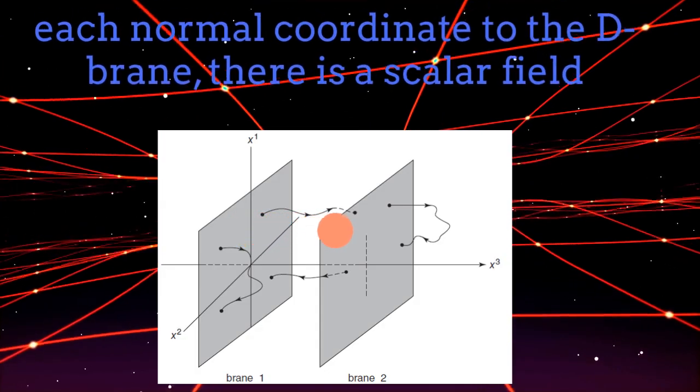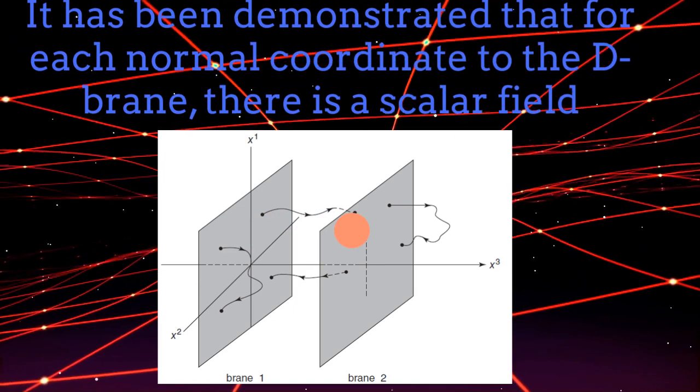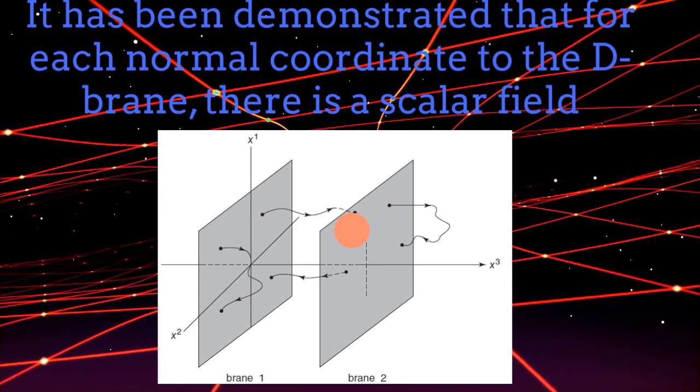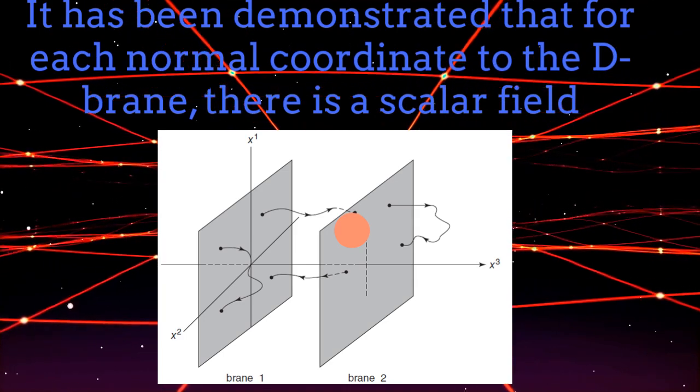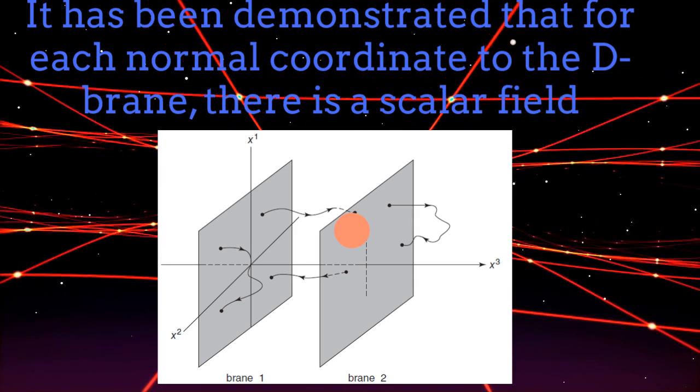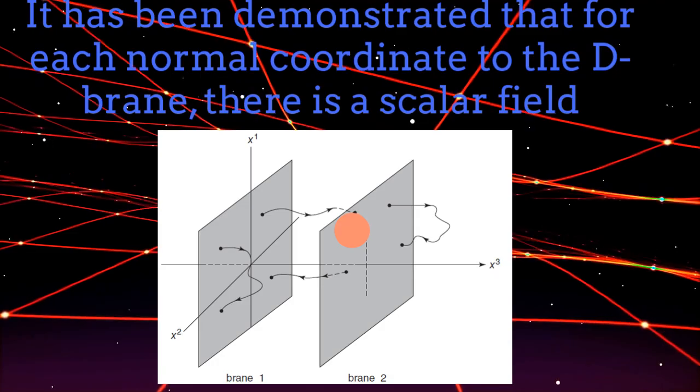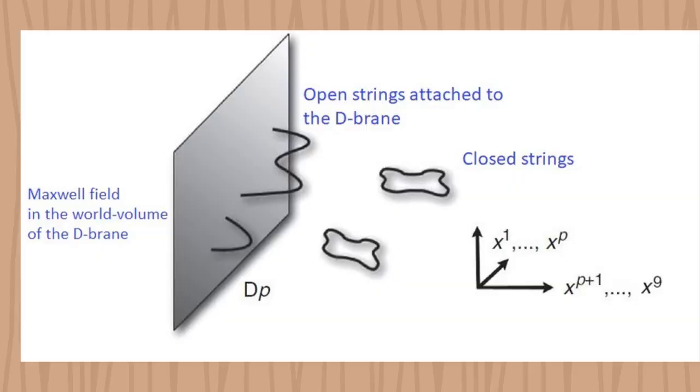D-branes are particular objects. Not only do they give constraints to the edges of strings, but it has been demonstrated that for each normal coordinate to the D-brane, there is a scalar field associated to it. Finally, there is also a Maxwell or photon field living along the world volume of the D-brane.